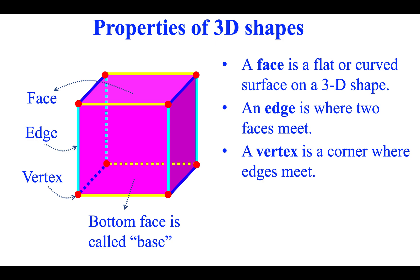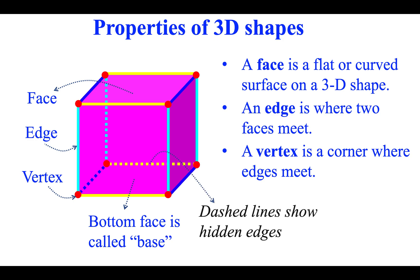Vertex. A vertex is a corner where edges meet. Dashed lines show hidden edges.